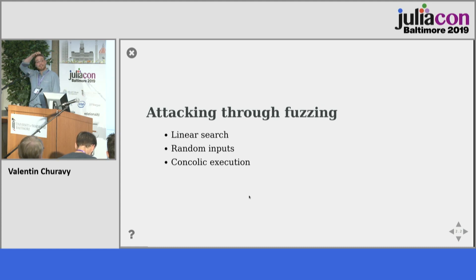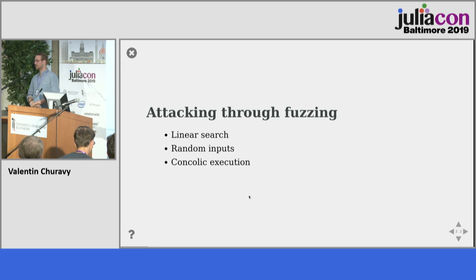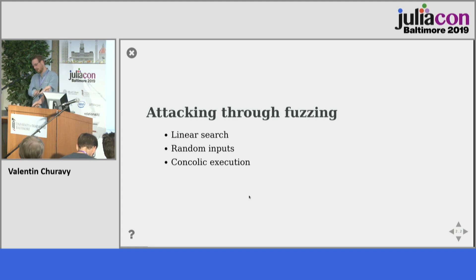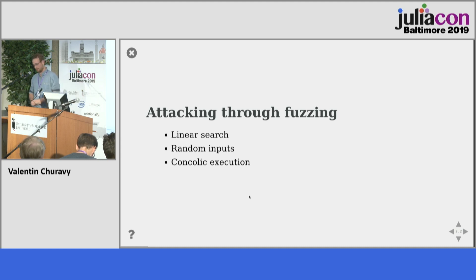Other fuzzers: fuzzing is the act of exploring a program with random or directed inputs to observe behavior — for example, finding inputs that throw an exception, crash, or stack overflow in your program. Or the other alternative is to do concolic execution.